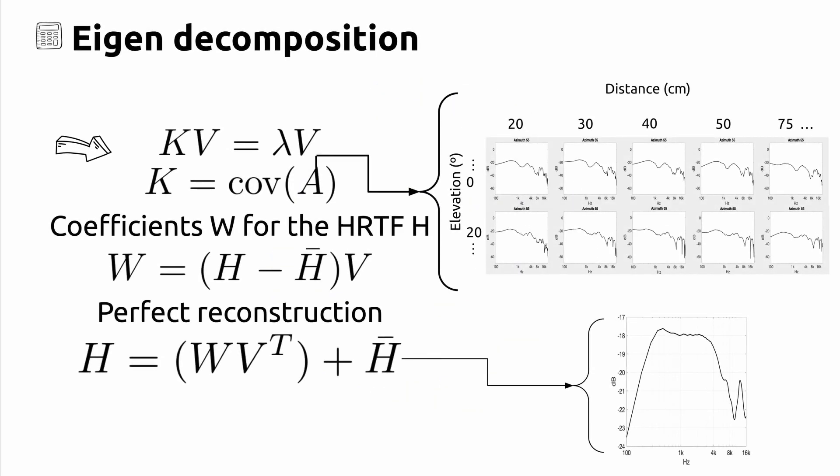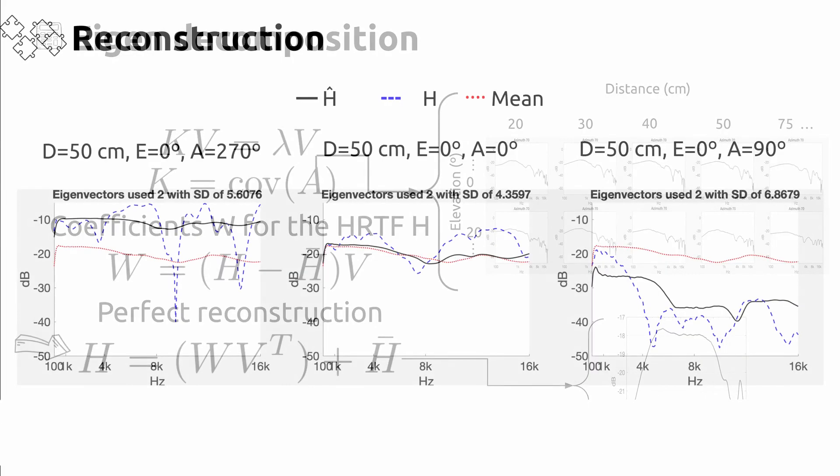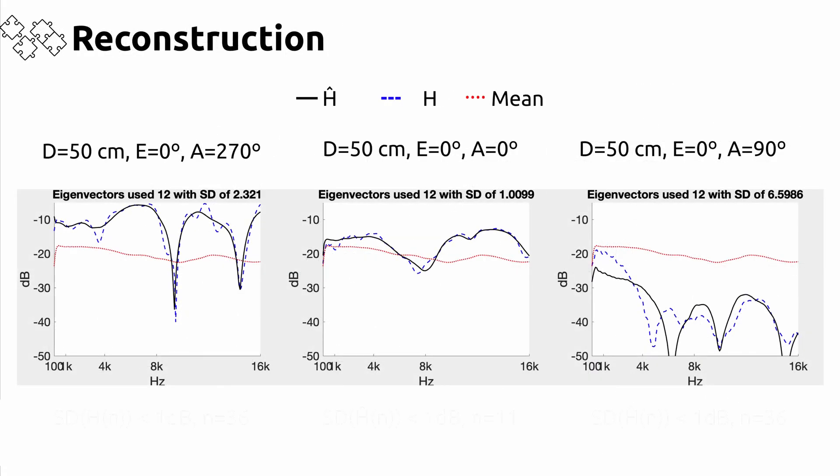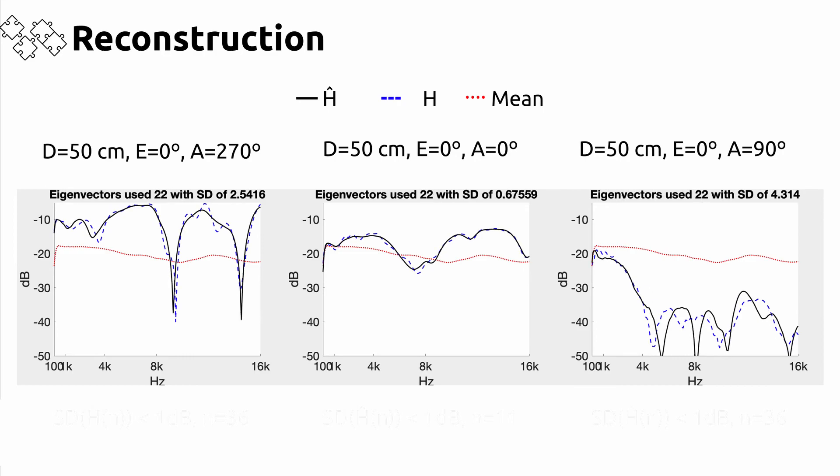We project the HRTF represented in k into an orthogonal space defined by the Aging vectors b. Then, a number of coefficients are computed to be later used to perfectly reconstruct the HRTF. Each coefficient is a weight given to each vector. By changing the number of vectors used in the reconstruction, we can reduce the amount of data needed for the spatializer.